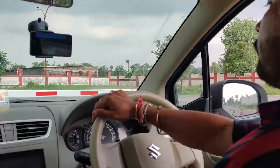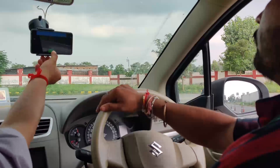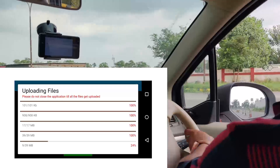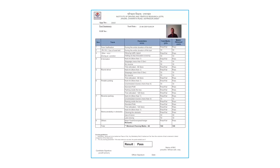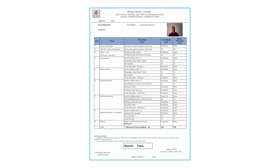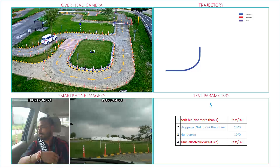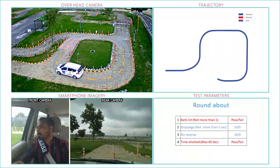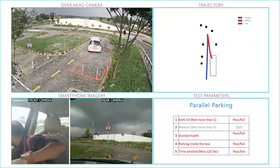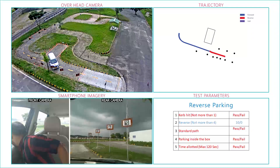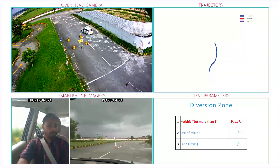At the end point, there is an instructor who stops the video recording and the data is then uploaded to a local server for further processing. HAMS then evaluates all the recorded data from the smartphone and generates the automated test result. With the help of smartphone imagery, HAMS can comprehensively evaluate all the test parameters without any human intervention and make the entire license testing process efficient.